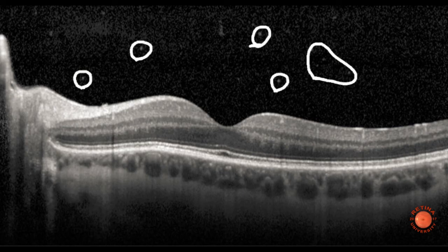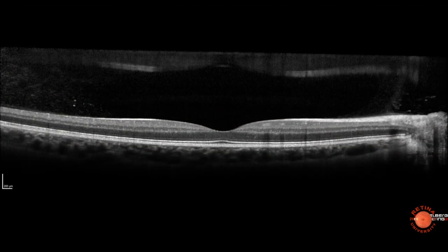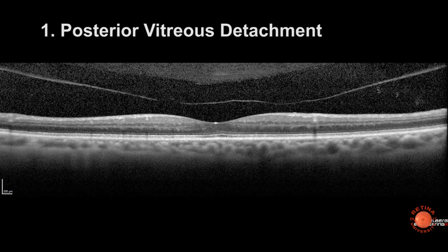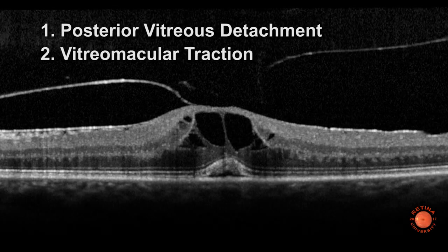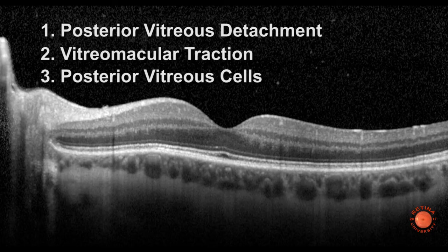In review, the OCT scanners can show you vitreous anatomy, but don't always — sometimes it's just the signal and you can't see the vitreous. The three situations where I'd like to look at the vitreous are: assessment of the presence or absence of a posterior vitreous separation, looking for vitreomacular traction, and finally, in a patient with uveitis or a vitreous separation, looking for the presence or absence of posterior vitreous cells.